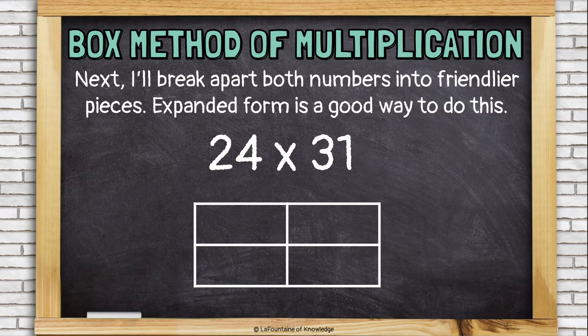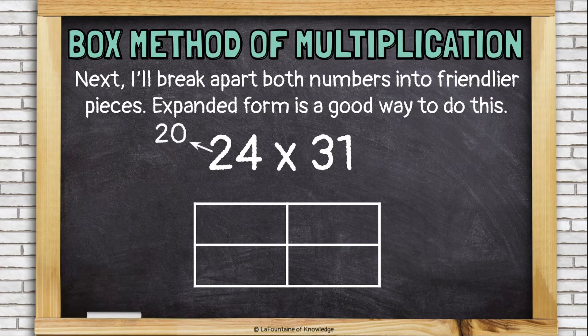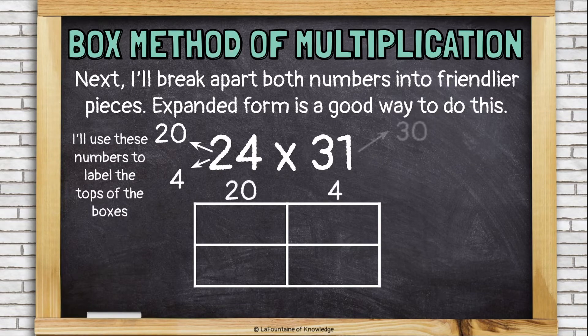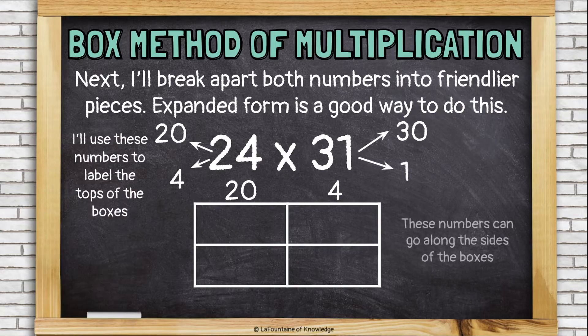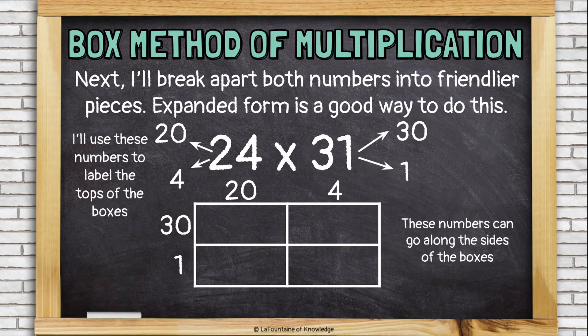Then, just like with our last problem, I need to break apart the numbers into friendlier pieces. Now, this time, I'm breaking apart both numbers though. So, 24, I'll break into 20 and 4. 31, I'll break into 30 and 1. And I'm going to put 20 and 4 along the tops of the boxes and 30 and 1 along the sides of the boxes.